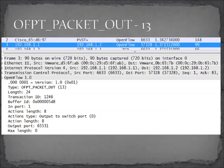The packet out message comes from the controller — source 1.1 to 1.2 — and its job is to tell the switch what to do with the message or frame type the switch is seeing. Just prior to this, there was a spanning tree message that came in, so the switch told the controller about it, and the controller responded with what it wants done with that particular frame.